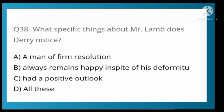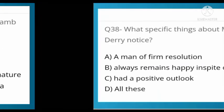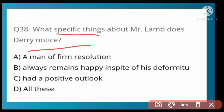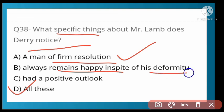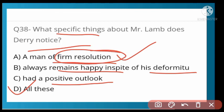What specific thing about Mr. Lamb did Derry notice? Options: a man of firm resolution, always remains happy in spite of his deformation, had a positive outlook, or all of these. Option D is correct — all of these. Despite many disabilities he remained happy, had a positive outlook, and had a firm resolution.